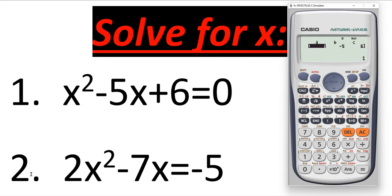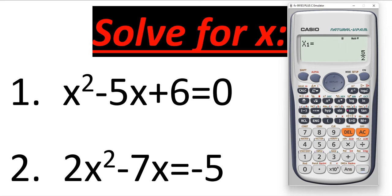Similarly, let's solve equation number two. Press the AC key to restore and enter new values. The value of a is the coefficient of x squared, which is two. Press equals. The value of b is the coefficient of x, which is negative 7. For the value of c, since the constant term negative 5 is on the right-hand side, we first shift it to the left-hand side, making it positive 5. So the value of c is positive 5 — not negative 5. Be careful! Always shift the constant term to the left-hand side first. Enter 5 and press equals.